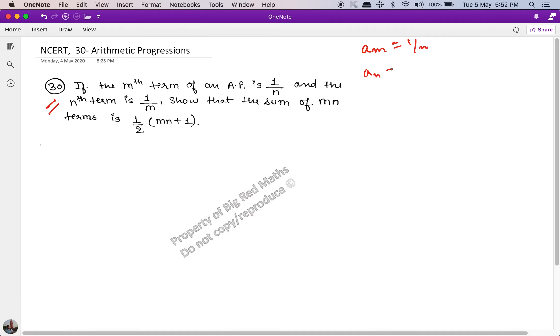a of n is equal to 1 upon m. Show that the sum of mn terms, which is s of mn, is equal to half of (mn + 1). So this is what we are to prove.